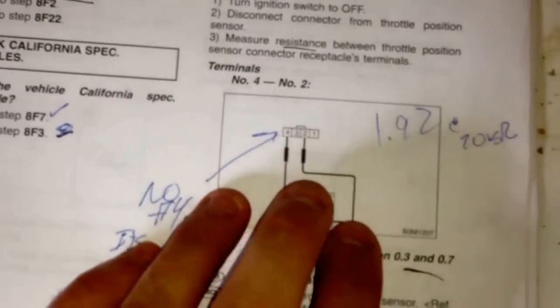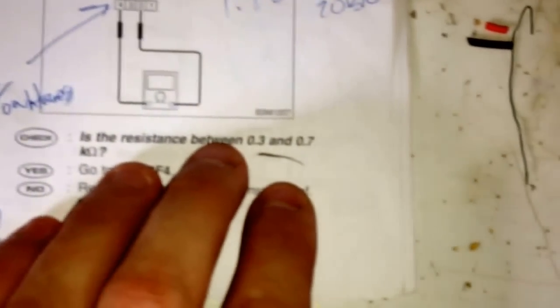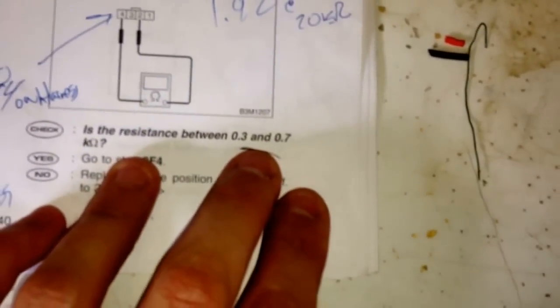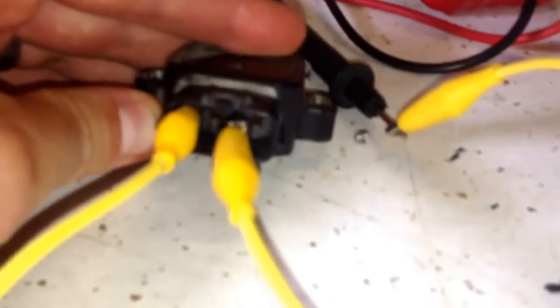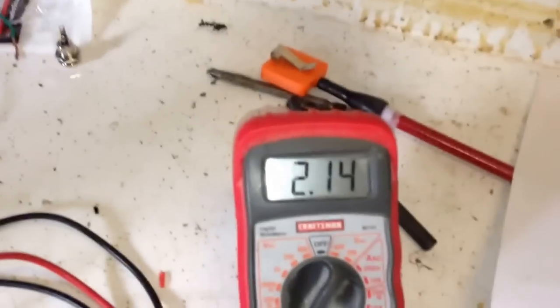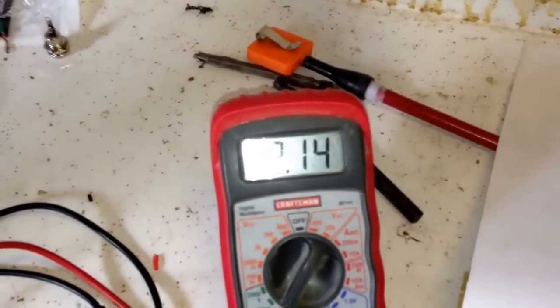Just like they say, is it between 0.3 and 0.7 kilo ohms? When I have it between two and four, which you can see it right there, there's four pins in there, tough to see but these alligator clips are right there on two and four, and it's 2.14 kilo ohms.